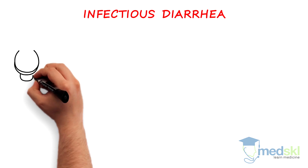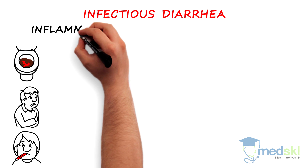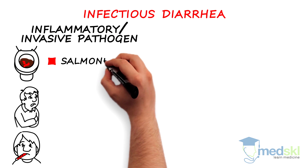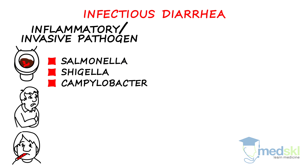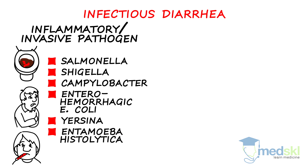The presence of blood in stool, severe abdominal pain, and fever will indicate an infectious inflammatory cause or invasive pathogen like Salmonella, Shigella, Campylobacter, Enterohemorrhagic E. coli, Yersinia, Entamoeba histolytica, and C. difficile. Think of C. difficile with recent hospitalization, antibiotic use, or nursing home residency.